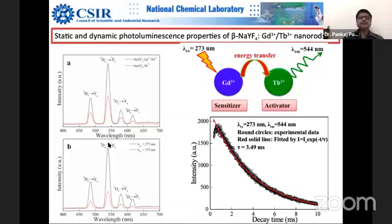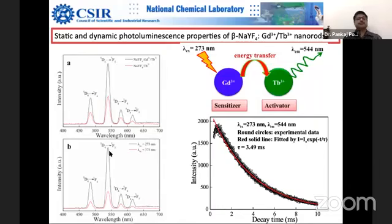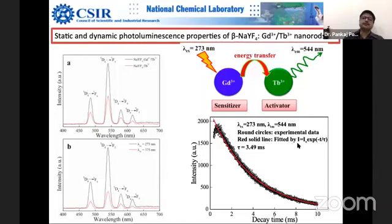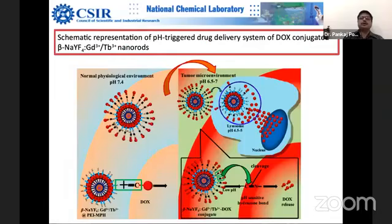There are other peaks as well, but 544 nm is the strongest. As you can see, when you change the excitation wavelength, the peak intensity varies but the positions do not vary. We optimized that at 273 nm excitation, the intensity is quite nice. This is time-resolved photoluminescence where we plotted the intensity as a function of decay time. The exponential curve was fitted. After that, we thought we will tag this with doxorubicin, which was available to us thanks to our collaboration with M-Cure Pharmaceuticals.